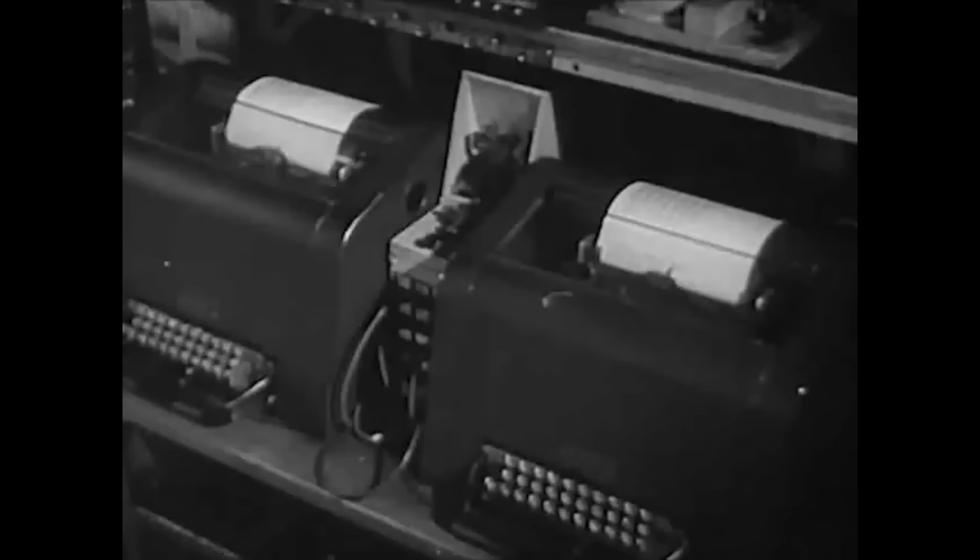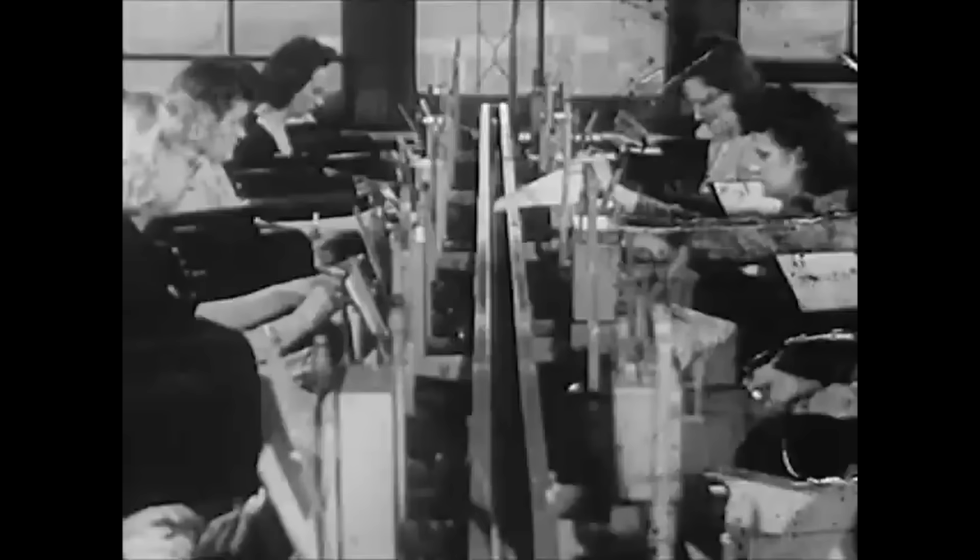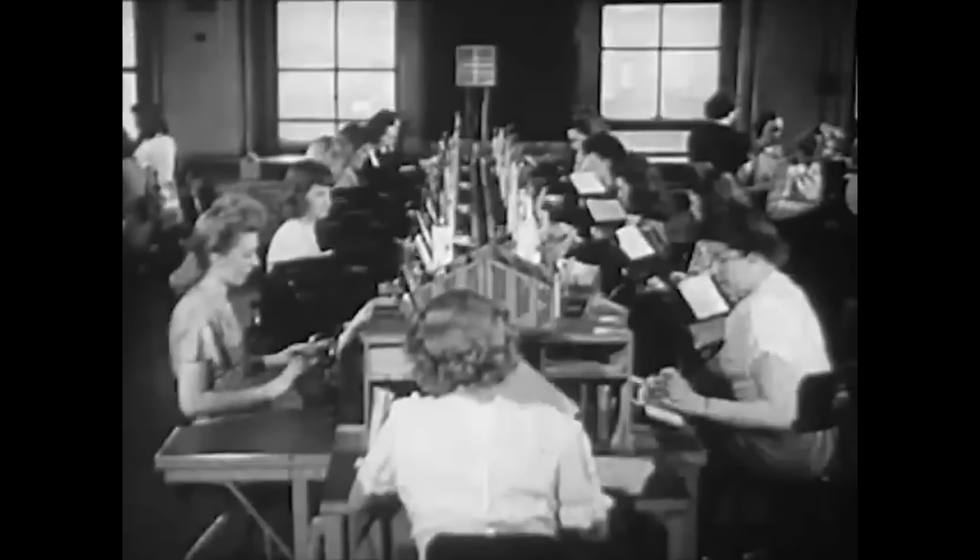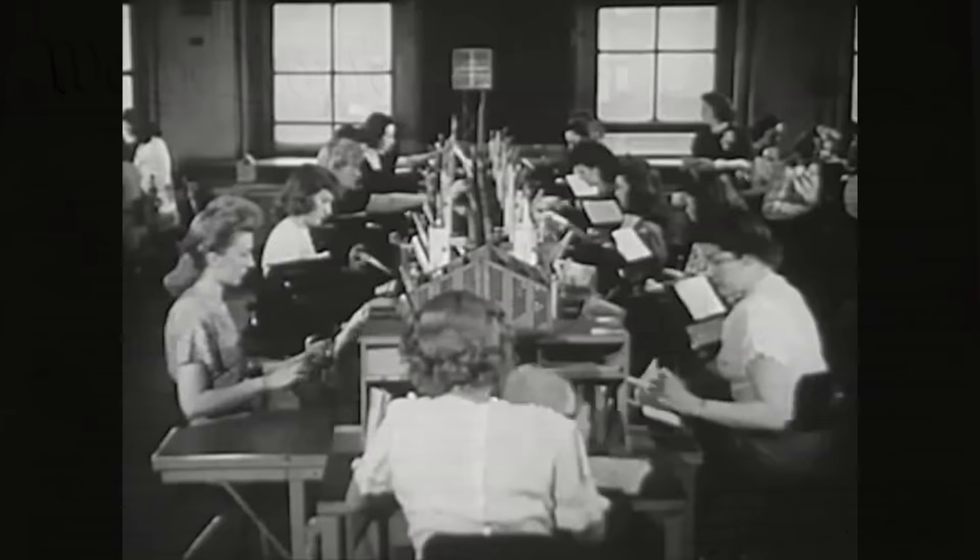As electronic communications like the telegraph and later teletype grew in popularity, so did another phenomenon of the soon-to-be modern world: the need to store and process the vast amounts of data being produced. The Constitution of the United States mandates that a census must be conducted every 10 years to apportion congressional representation. And as the nation grew, the time it took to process all that data for the decennial census kept growing alongside it. The 1880 census, for example, wasn't completed for seven years.